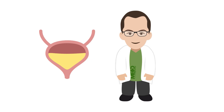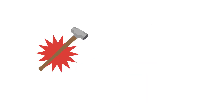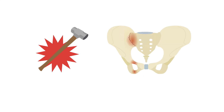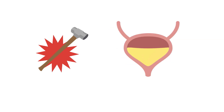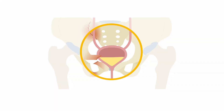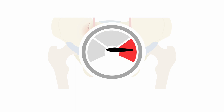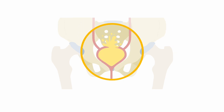Now we are ready to review the bladder. Severe blunt force injuries to the pelvis not only cause fractures, but can also injure the urinary bladder. This can happen due to projection of bone fragments into the bladder wall, or due to sudden increases in pelvic pressure causing the bladder wall to tear and rupture.